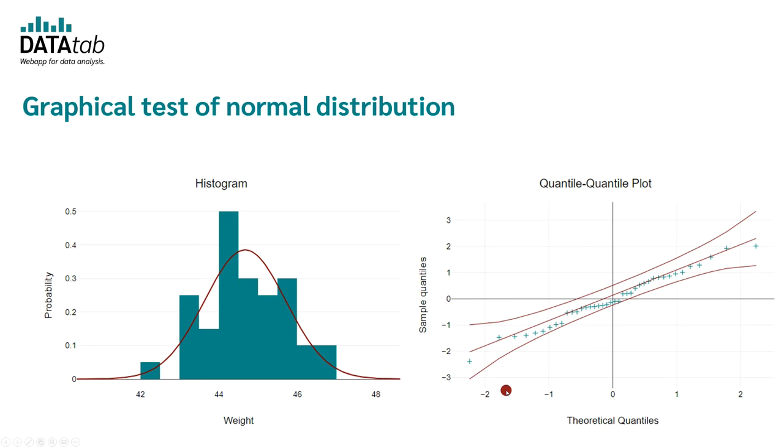Your data would not be normally distributed if, for example, they form an arc and lie far away from the line in some areas.